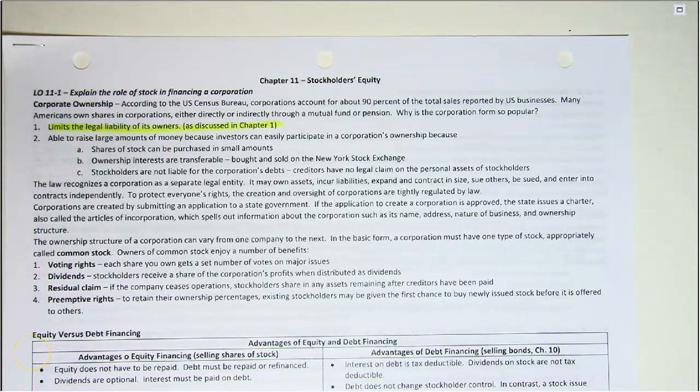Welcome to chapter 11. In chapter 11 we're going to be concentrating on the stockholders' equity section of the balance sheet, looking at it from the perspective of a corporation. We learned back in chapter one that there were three primary types of business organizations: sole proprietorships, partnerships, and corporations.